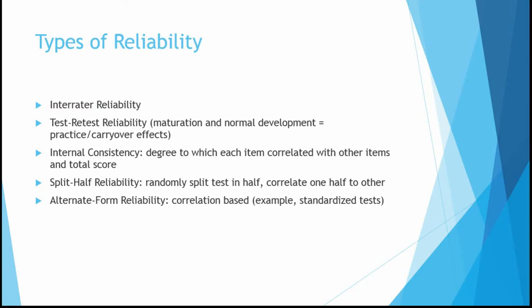Split-half reliability is a way to test reliability where we take a test, split it in half, and correlate one half to the other. One challenge is how to split the test randomly — some people use the first versus second half, others use even versus odd items. Either way, we're using a correlation to examine how closely related one half of the test is to the other half.